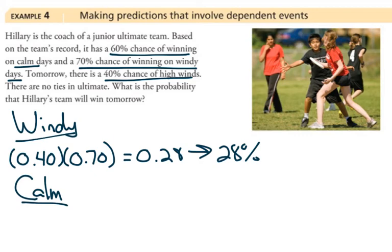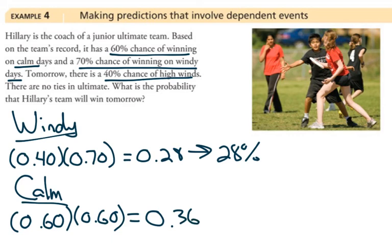Well if there's a 40% chance of high wind then there must be a 60% chance of being calm. And we also know that they have a 60% chance of winning on calm days. Multiply those out, 0.36 which would be 36%.